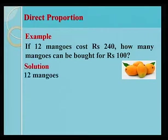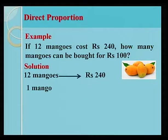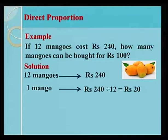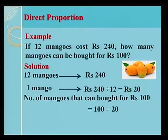The solution? 12 mangoes cost 240 rupees. One mango will cost 240 divided by 12 equals 20 rupees. Number of mangoes that can be bought for 100 rupees? We have to divide 100 rupees by 20, giving 5 mangoes.